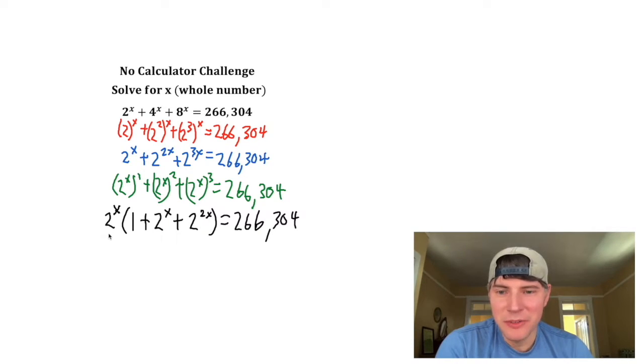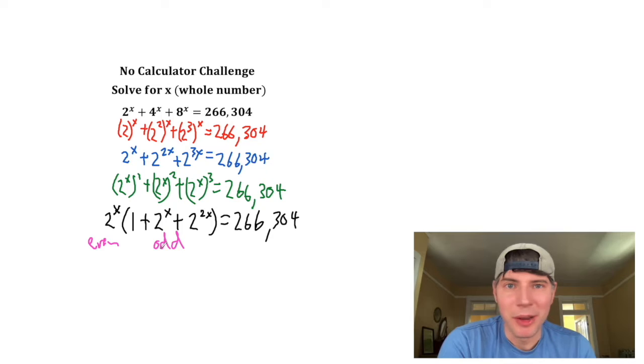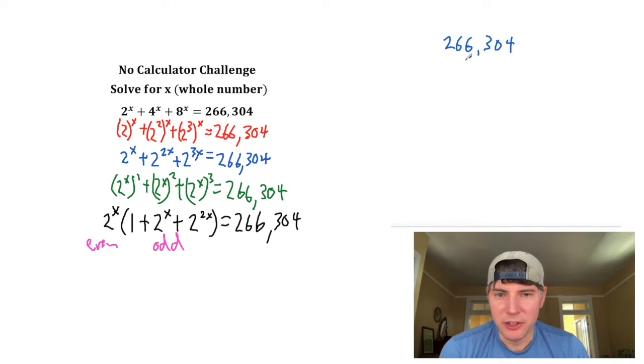So from here, we've split this up into an even part. 2 to the x will be even. And then 1 plus 2 to the x plus 2 to the 2x, this will be odd. So I think if I break this into prime factors, put all the evens here and all the odds here, that might work. Let's try it out. We can make a factor tree for this.